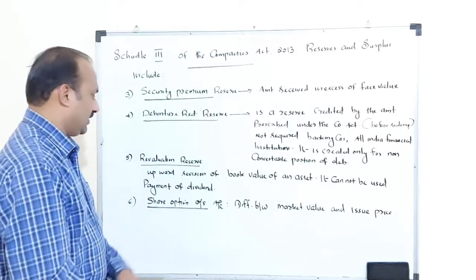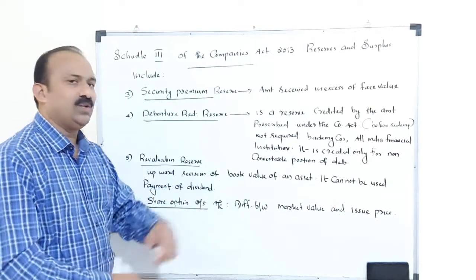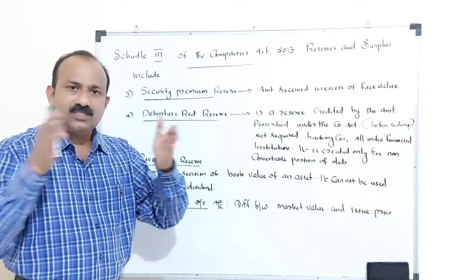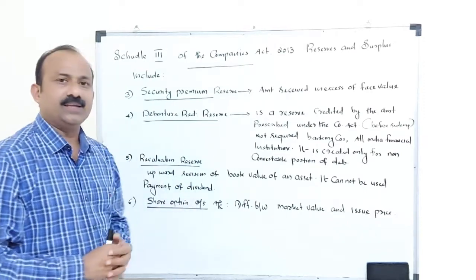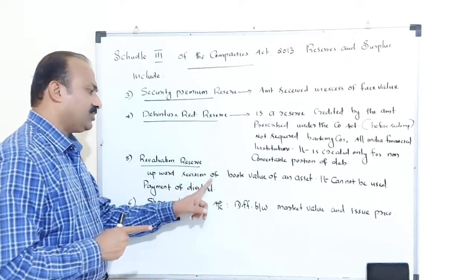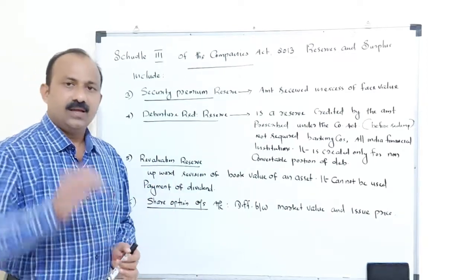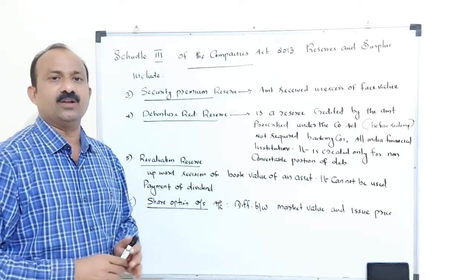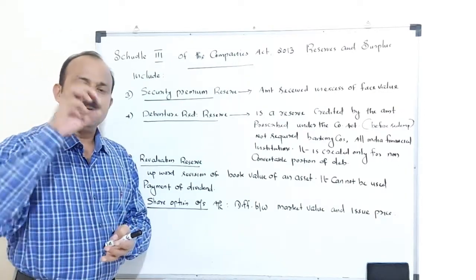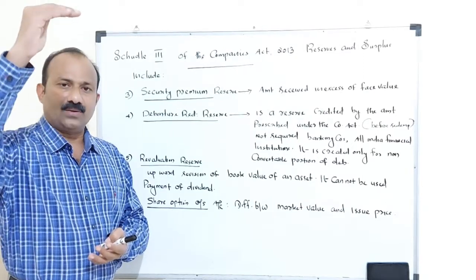Revaluation reserve is another reserve created for the upward revision of the book value of an asset. Sometimes the book value of an asset will increase or decrease. In order to adjust that increase or decrease, you have to create a separate reserve known as revaluation reserve — for upward revision of book value of an asset. Importantly, revaluation reserve cannot be used for the payment of dividend; it is only used to adjust the increased value of assets when the market value is more than the book value.